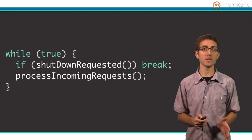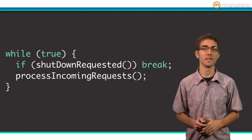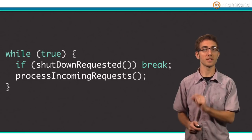You can control a loop's execution with break and continue. Use break to stop looping. Here's an example. If shutdownRequested returns false, the program breaks out of the loop.